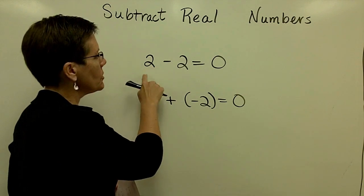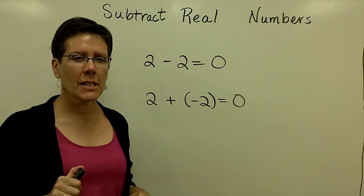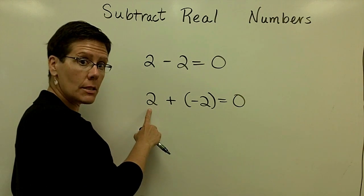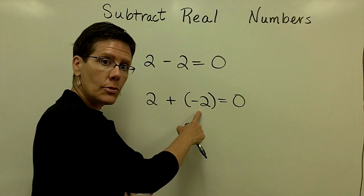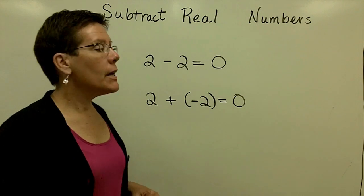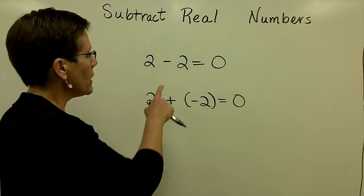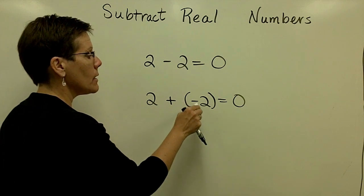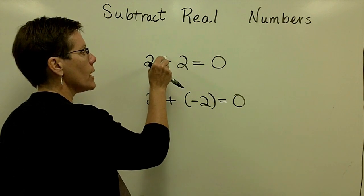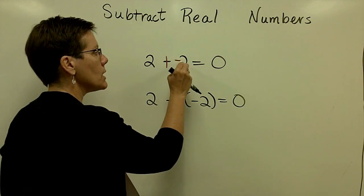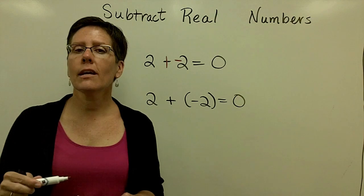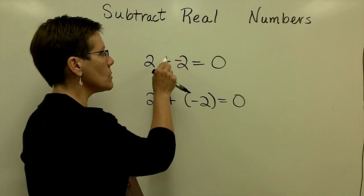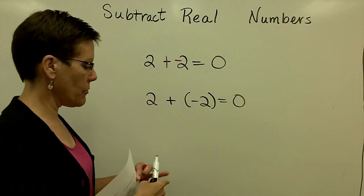We all know that 2 minus 2 is equal to 0. And with the logic and what we've been doing with adding real numbers, we also know that if we took a positive 2 and added a negative 2 to that, we'd also get 0. This is the premise of why whenever we have a subtraction problem, it's the same thing as adding the opposite value. So I can take any subtraction problem and change it to an addition problem and change the sign of the number following. I'll be saying that I swipe, swipe—I use my pencil once to change the subtraction symbol to an addition symbol and I change the sign of the number following.